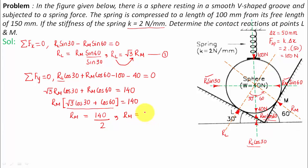So 140 divided by 2, ultimately the value of R_M works out as 70 Newtons. What you need to do right now is put this value of R_M over here and you're going to get the value of R_L. So R_L shall work out as root 3 times R_M. Root 3 times 70.